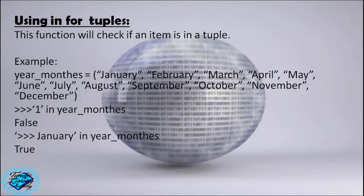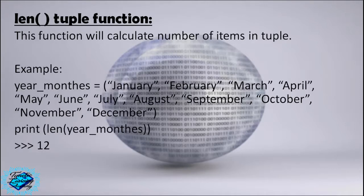Using 'in' for tuples. This function will check if an item is in a tuple. Example: year_months equals January through December. We check: 1 in year_months is False; January in year_months is True.